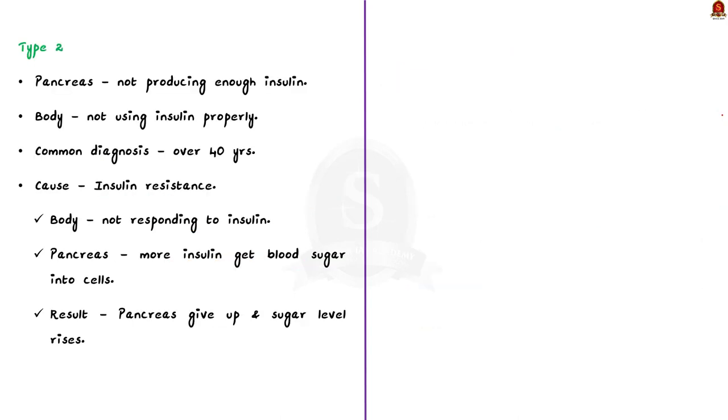The next one is type 2. Type 2 diabetes occurs when the pancreas is not making enough insulin or the body isn't using insulin well. This type is more common over the age of 40, but it can also happen at any age.